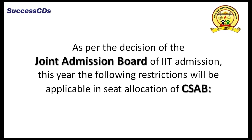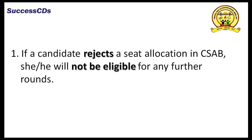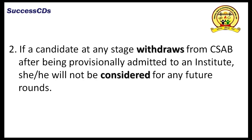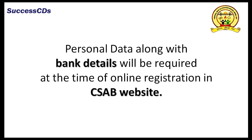First, if a candidate rejects a seat allocation in CSAB, she or he will not be eligible for any further rounds in CSAB, including spot round and extra spot round. Second, if a candidate at any stage withdraws from CSAB after being provisionally admitted to an institute, she or he will not be considered for any future rounds of CSAB seat allocation, including spot round and extra spot round. Personal data along with bank details will be required at the time of online registration on the CSAB website.